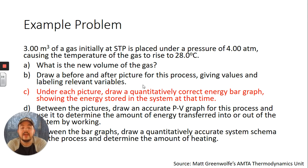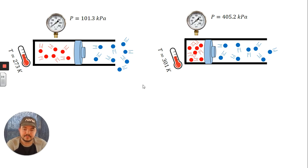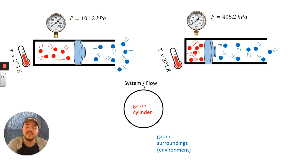Part c, under each picture we're going to draw a quantitatively correct energy bar graph showing the energy stored in the system at that time, that time meaning our two snapshots. So here's our picture we just drew, and we are now going to draw some energy bar graphs. First, let's start with an O in the middle of our LOL diagram where we define our system and where later on we can draw some flow of energy into or out of that system. So the system goes inside of the circle, which is going to be the gas inside of our cylinder, the red gas particles there. And then the gas in our surroundings, our environment, that's going to be outside of our system.